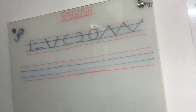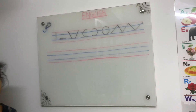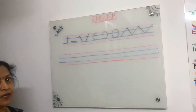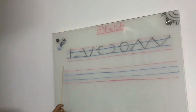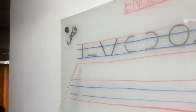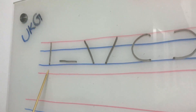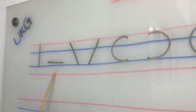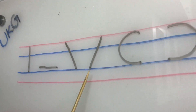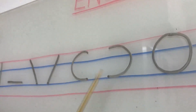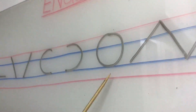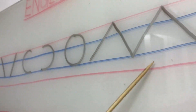Okay children, now we will write small letters A to H. Before writing, once we will revise strokes. See the book. This is standing line, sleeping line, slanting line, one more slanting line, left curve, right curve, circle, zigzag lines.